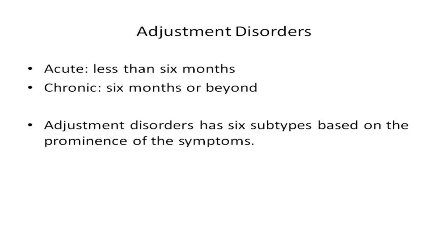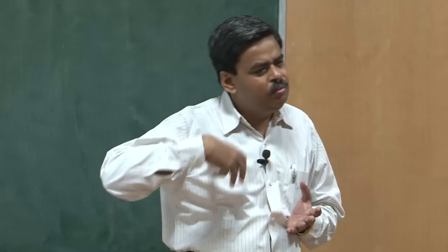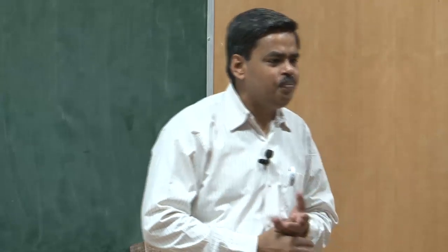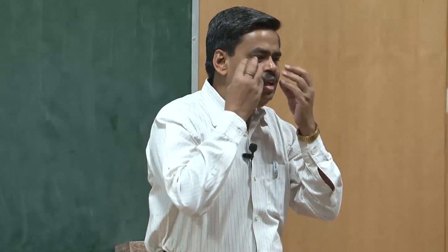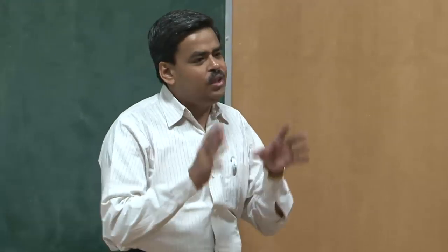Based on the types of problems reported in the clinic, adjustment disorder has been classified into six different subgroups — six subtypes based on the prominence of the symptom. The first subtype is 'with depressed mood,' characterized by depressed mood, tearfulness, or feelings of hopelessness dominating the symptom set. Either you are in a completely sinking depressed state, or your depression reaches a point of complete hopelessness and you suddenly have tears rolling down your eyes.